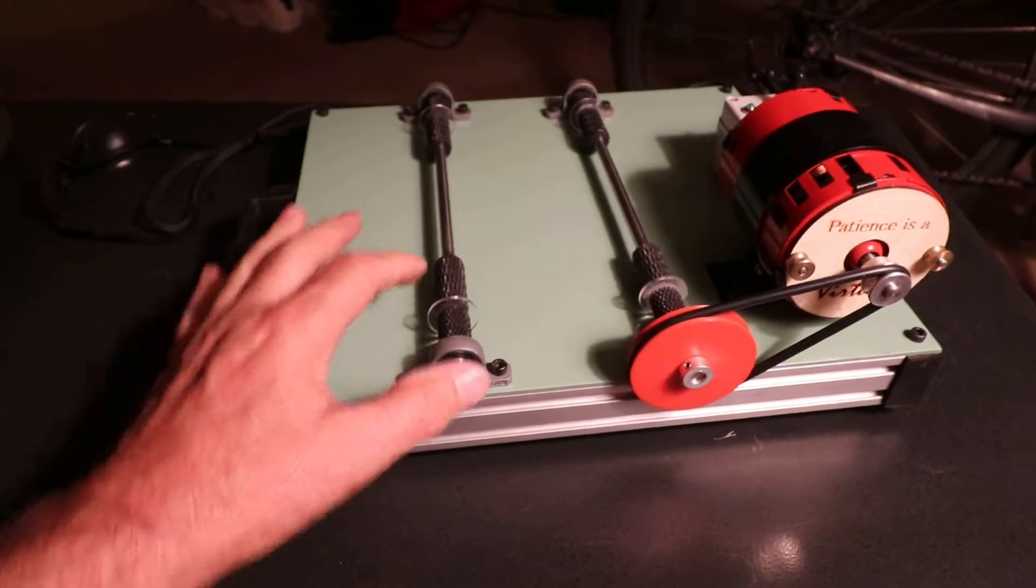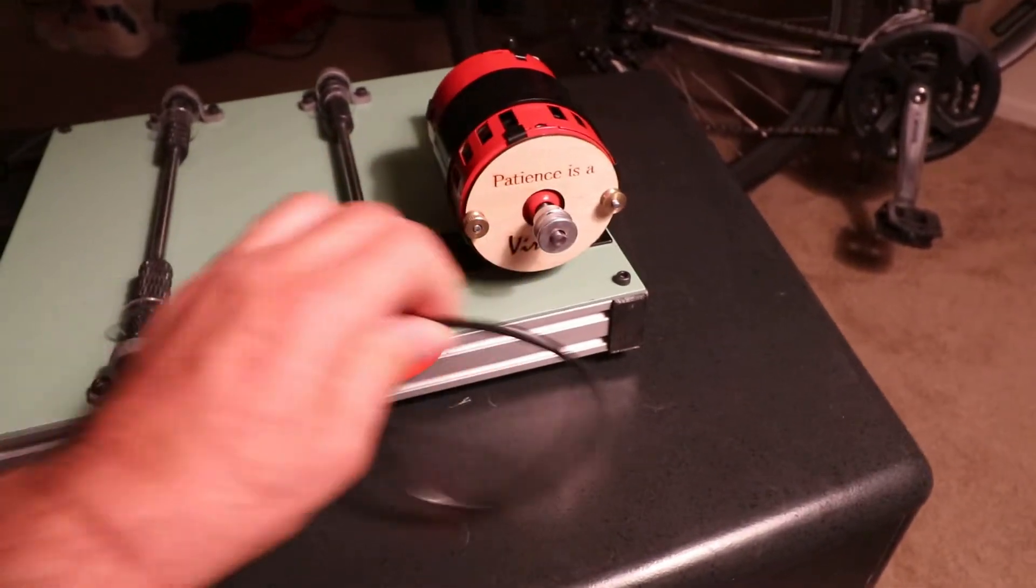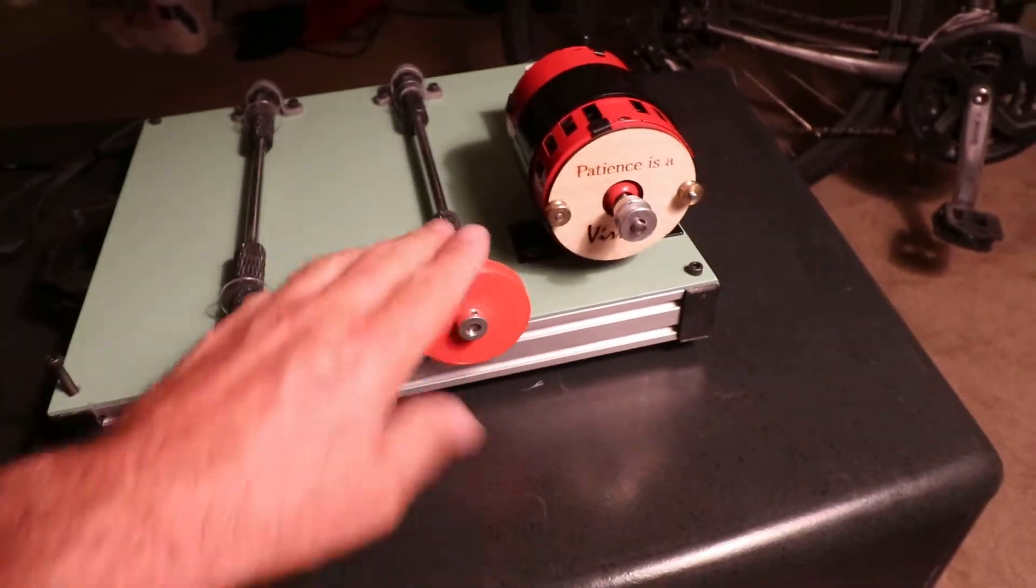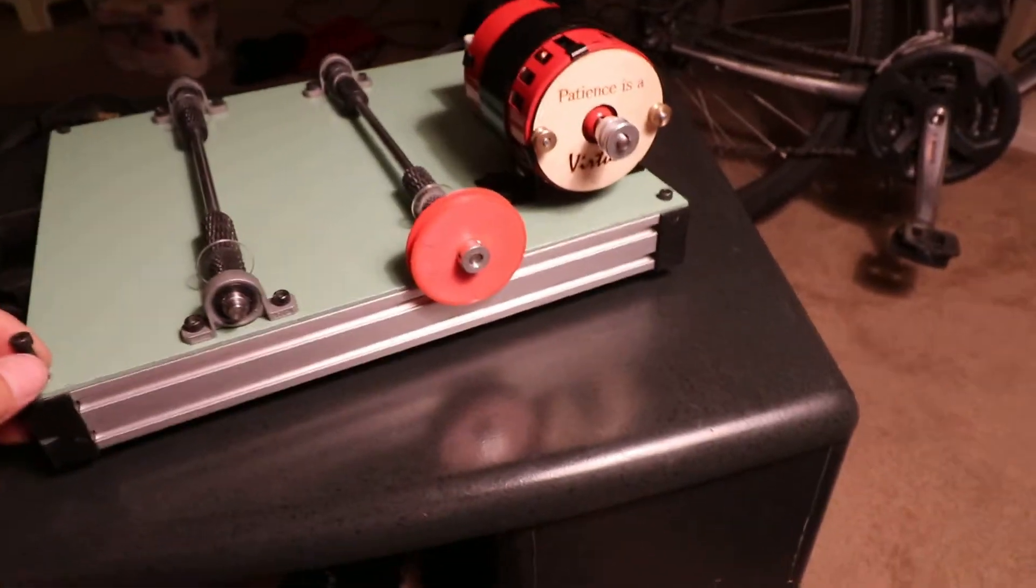He just takes a CAD file and 3D prints stuff. Anyway, I did get like 10 of these O-rings, the shafts, the pulley. See the pulley? Now look at what he did.